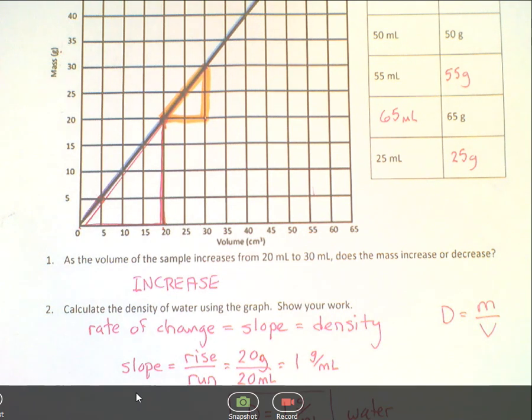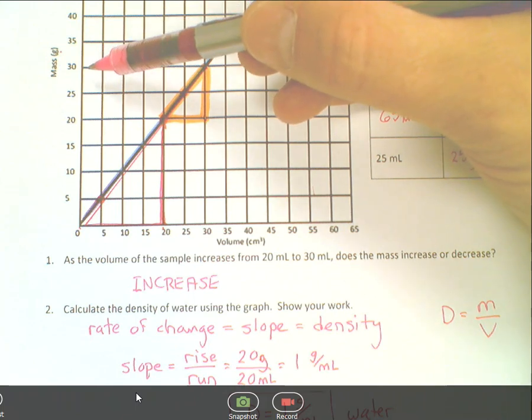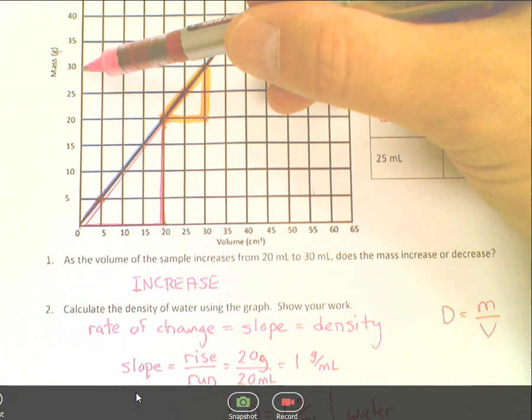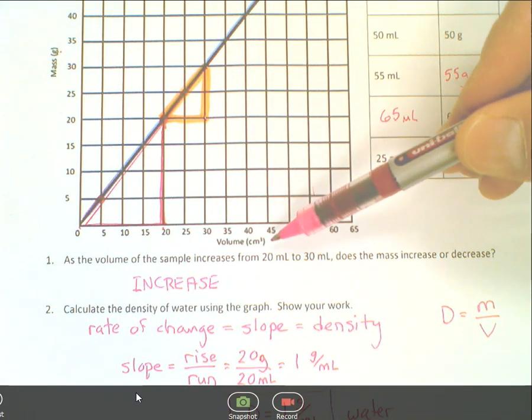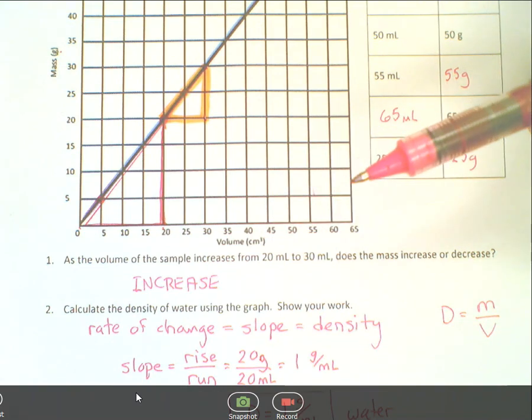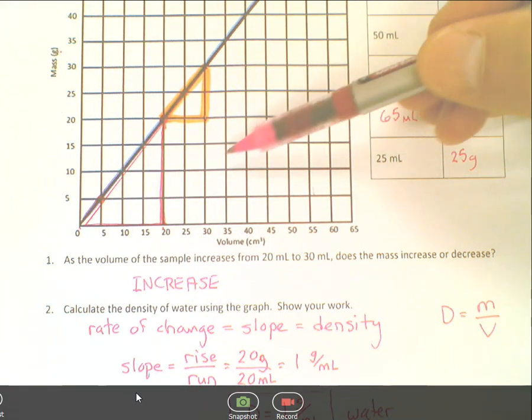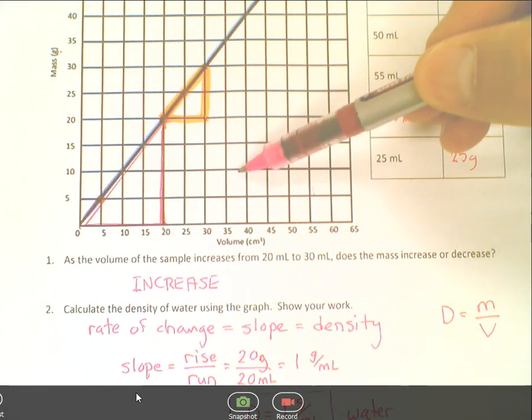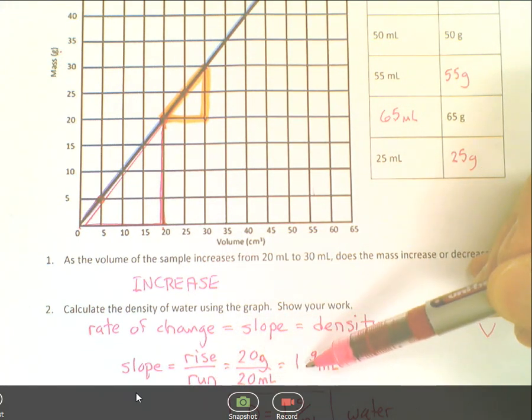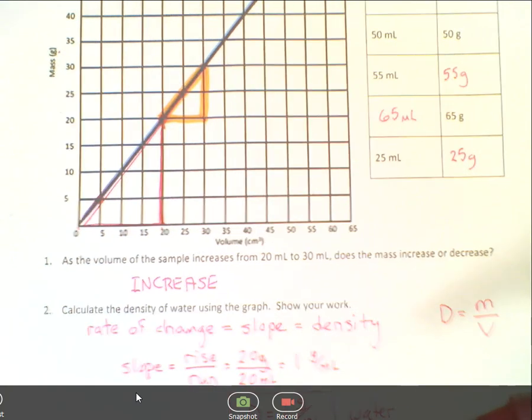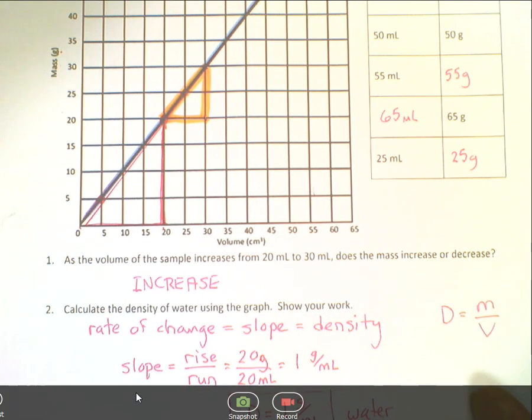And it's grams per milliliter because you would see that you've got up here that the rise is grams and the run is milliliters. In this case, I put cubic centimeters, milliliters. Remember, they're the same thing. No matter anywhere on this graph, if I made a triangle and found the rise over the run, I would end up equaling out at the value of 1 gram per milliliter.